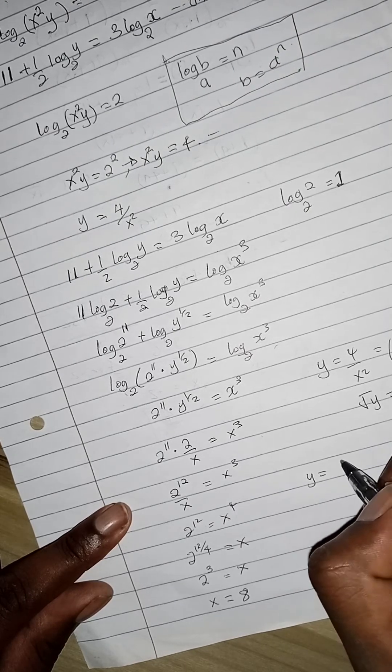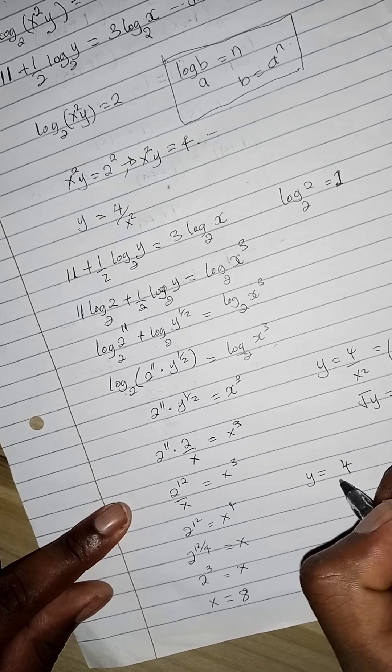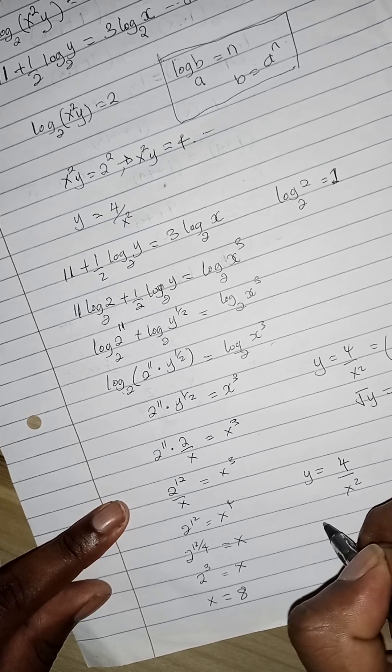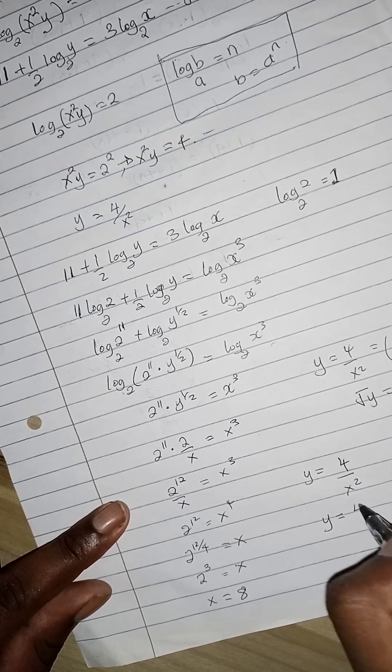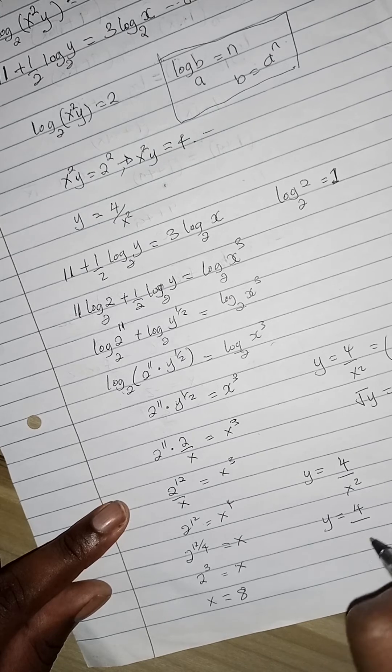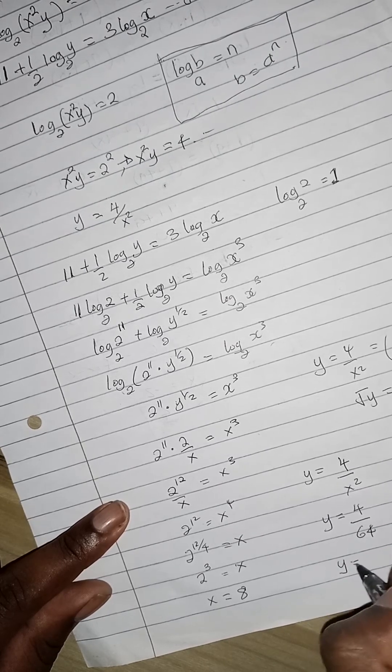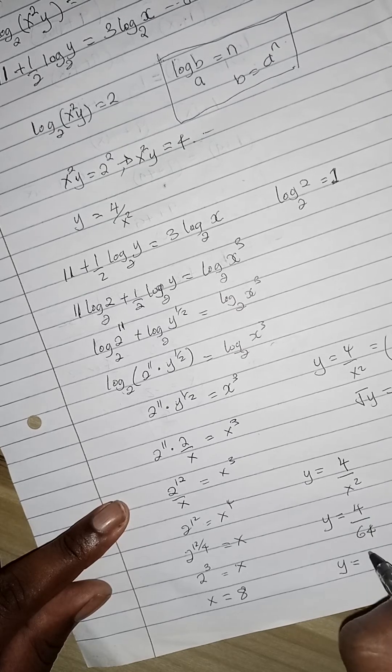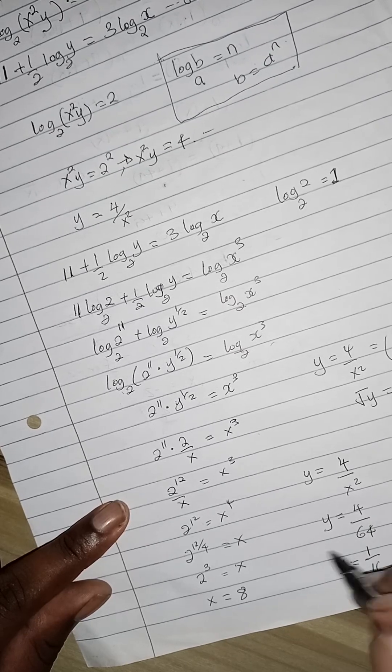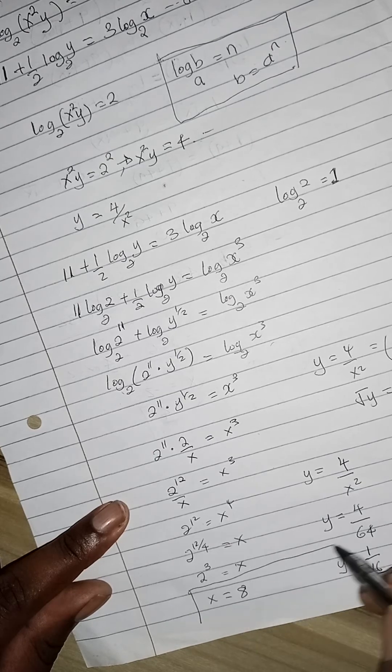Now y was 4 over x squared. Therefore, y equals 4 divided by 64, so y equals 1 by 16. These are the answers.